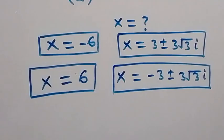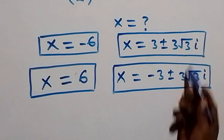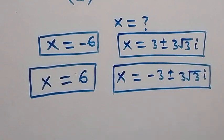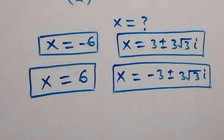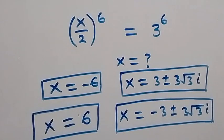Altogether, we have six solutions: x = -6, x = 6, and four complex solutions: x = 3 ± 3√3 i and x = -3 ± 3√3 i. Thank you for watching. Don't forget to subscribe for more videos, turn on the notification bell, share this video, and give it a thumbs up. See you in the next class, bye for now.